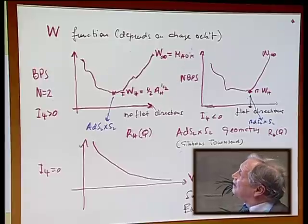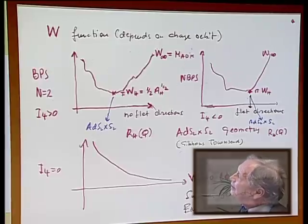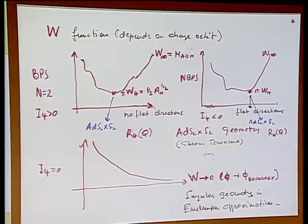It is interesting, however, that in four dimensions exists a configuration of the charges for which this invariant which determines the area of the black hole is actually zero. In this situation, the Einsteinian approximation of the black hole fails because the geometry of the black hole becomes singular. There is a singular geometry. And this charge configuration, actually in N equals 8, corresponds precisely to a non-supersymmetric black hole.